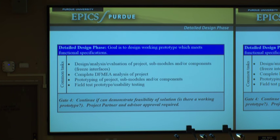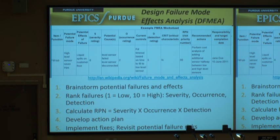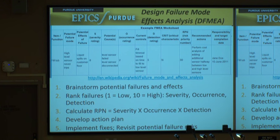We'll talk about DFMEAs as another tool you can use in detail design. We continue to prototype, field test, and do usability testing. DFMEA stands for Design Failure Modes and Effects Analysis. Basically what you're trying to do is identify potential risk to your product design and mitigate that risk through an improved design.